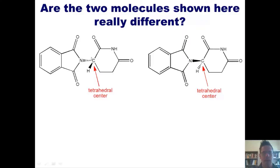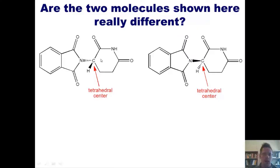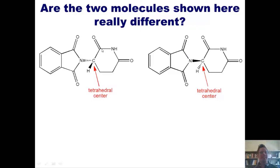Looking at the molecule on the left, the carbon with tetrahedral geometry is bonded to a hydrogen in one direction, a nitrogen in another, a carbon in another, and a different kind of carbon in yet another direction. New students are sometimes tempted to think the two carbons are the same because they're both carbons, but that's not true. One carbon is a CH₂, and the other is a carbon double-bonded to an oxygen and single-bonded to nitrogen — so they are structurally different.